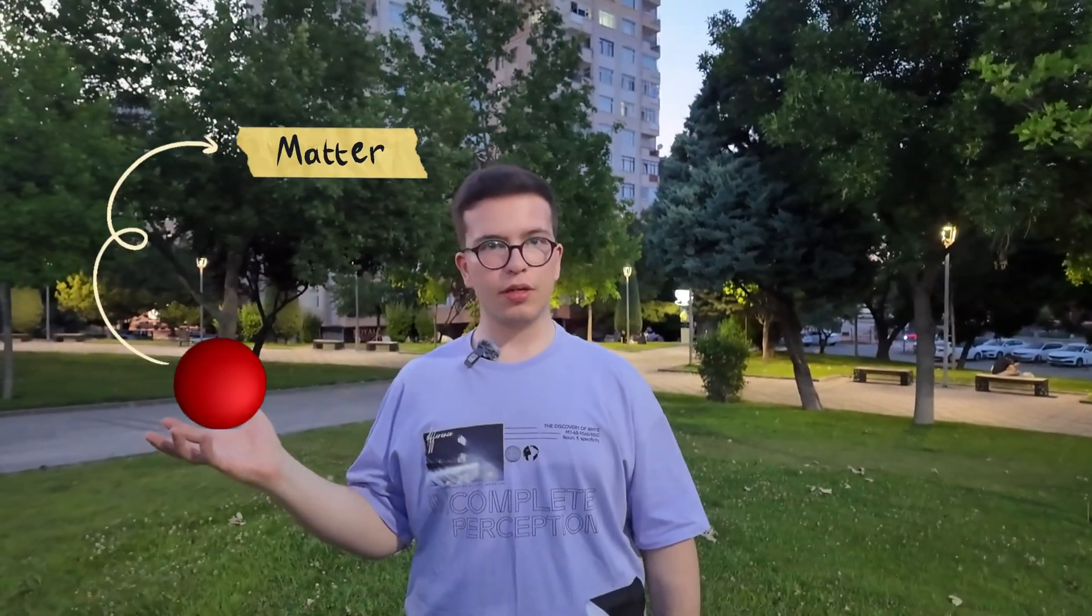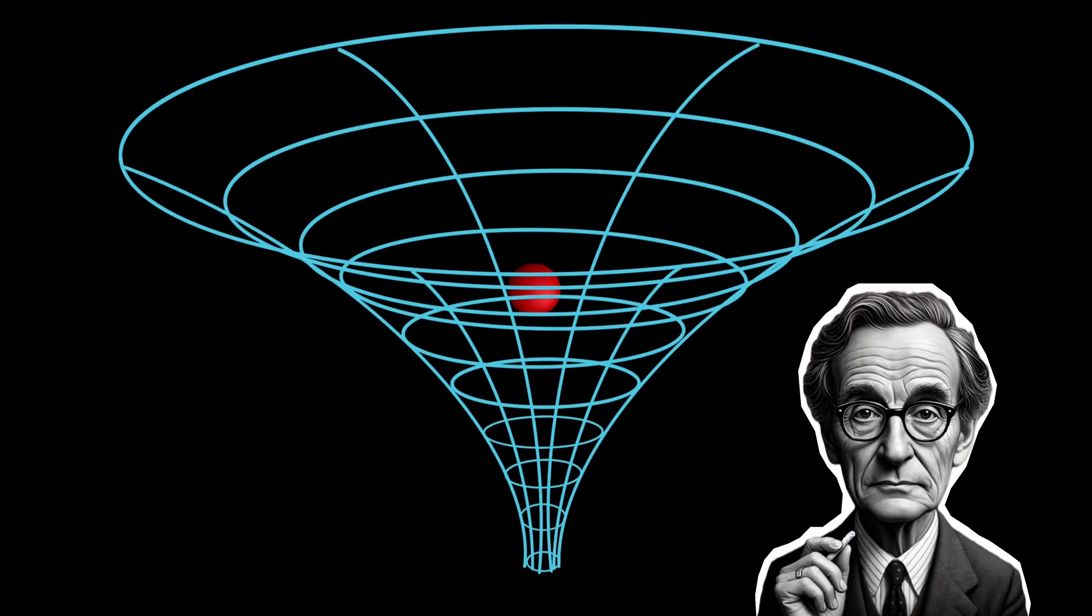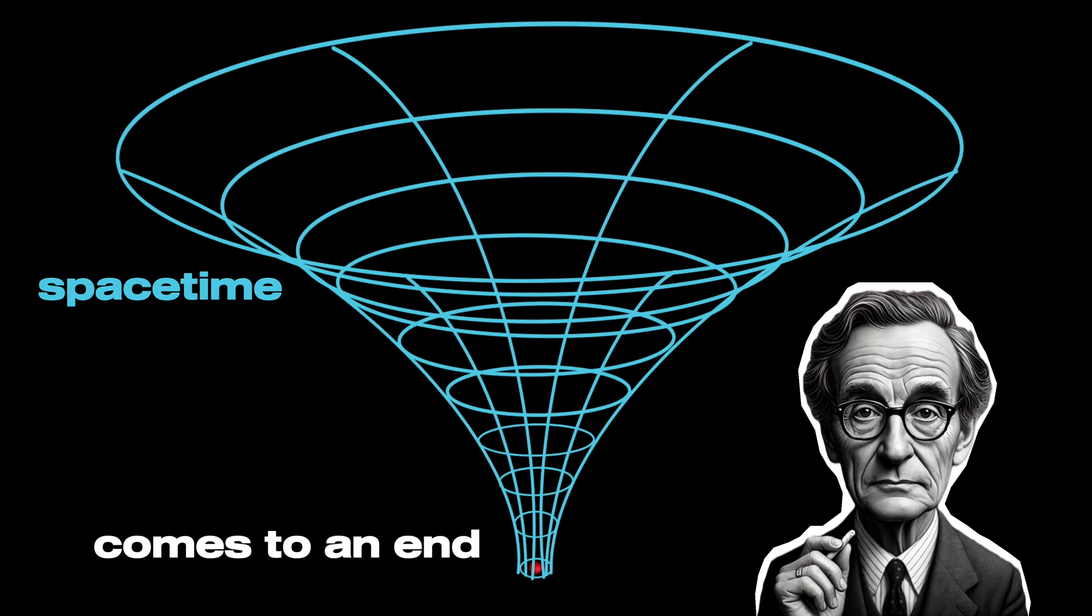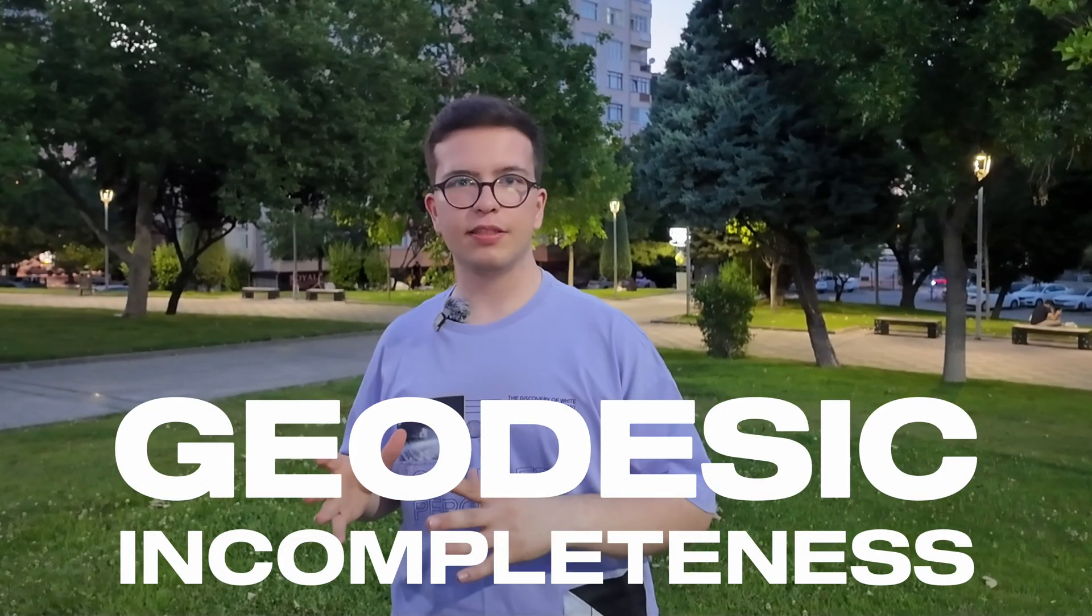What about singularities? A singularity is formed when a gravitational field becomes infinite, when matter is forcibly compressed into a point. And he proved it by showing that spacetime literally comes to an end inside the black hole. And that was called geodesic incompleteness.